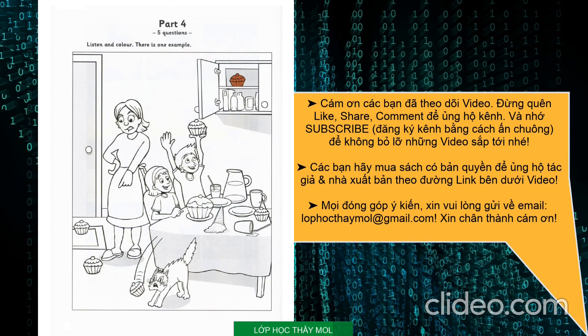Can you see the cakes in this picture? Yes, I can. There are lots. There's a cake in the cupboard. Can you see that one? In the cupboard? Oh, yes. Can I colour that cake brown? Brown? Yes. OK. Can you see the brown cake in the cupboard? This is an example.